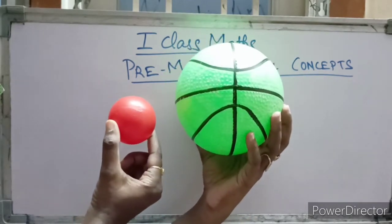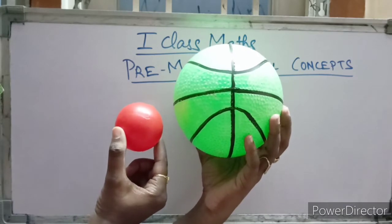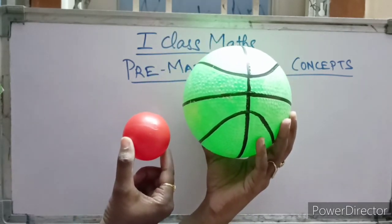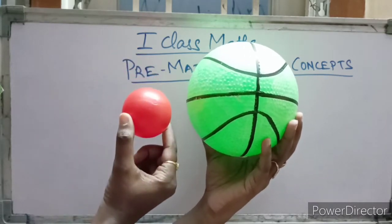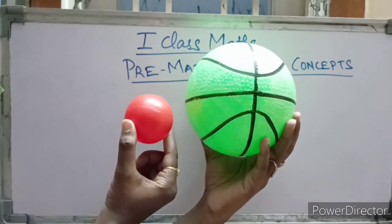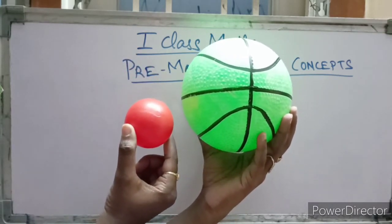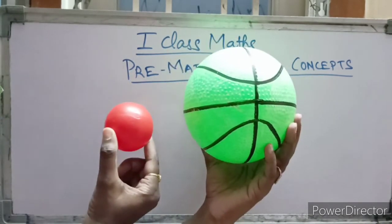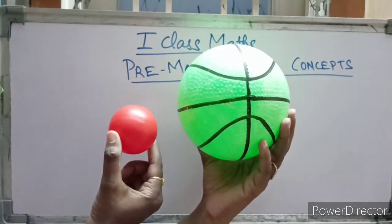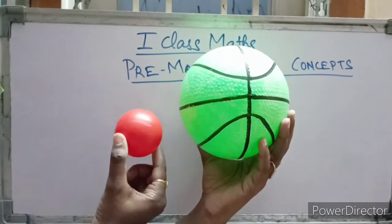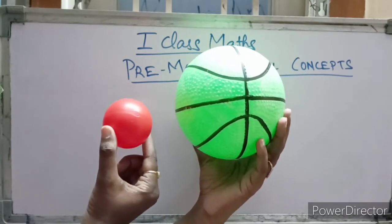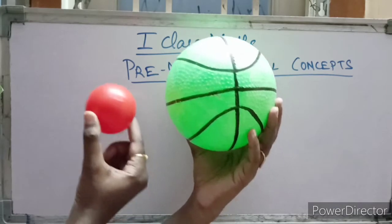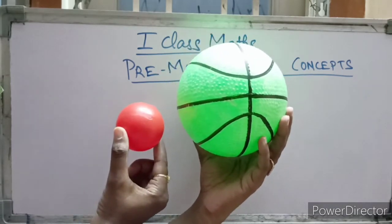Do you understand which is bigger and which is smaller? Yes — green is the bigger ball, red is the small ball. Now you tell me: which is big? Green. Which is small? Red. Yes, understood — which is big and which is small.